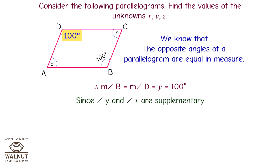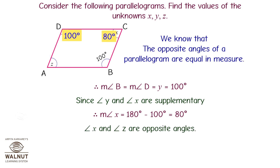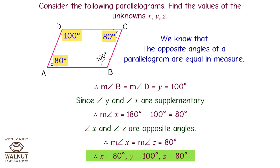Angles Y and X are supplementary, so they add up to 180 degrees. Therefore, angle X equals 180 minus 100, which is 80 degrees. Since angles X and Z are opposite angles, angle Z also equals 80 degrees. So angle X is 80 degrees, angle Y is 100 degrees, and angle Z is 80 degrees.